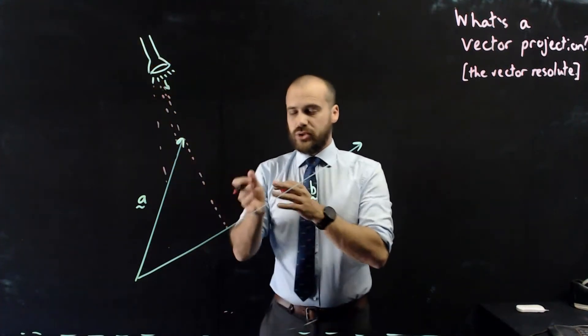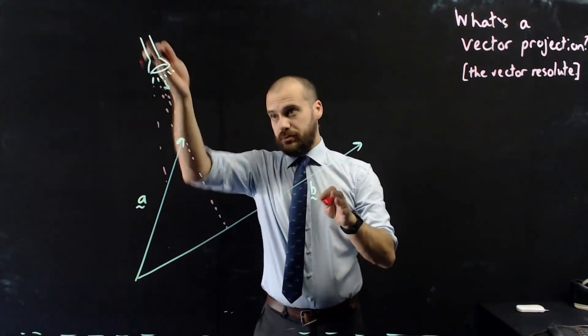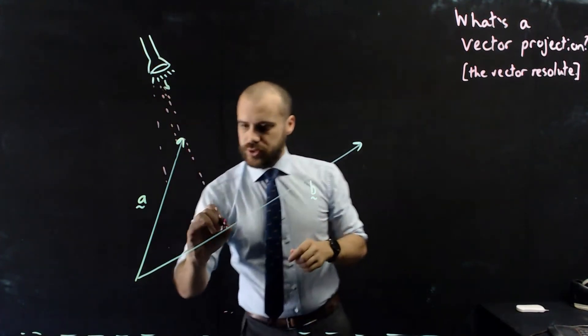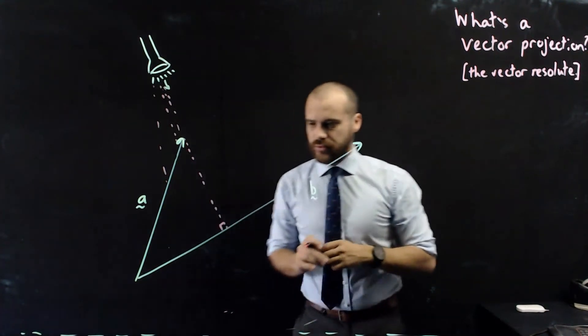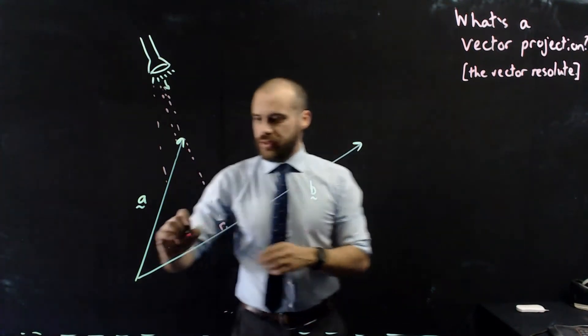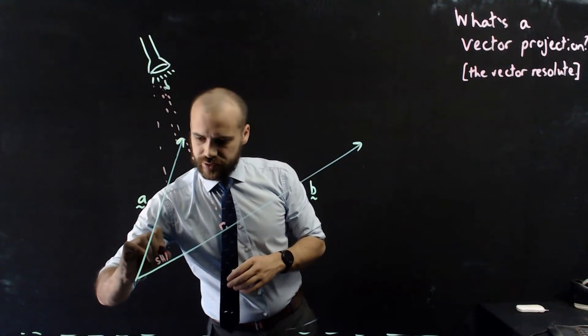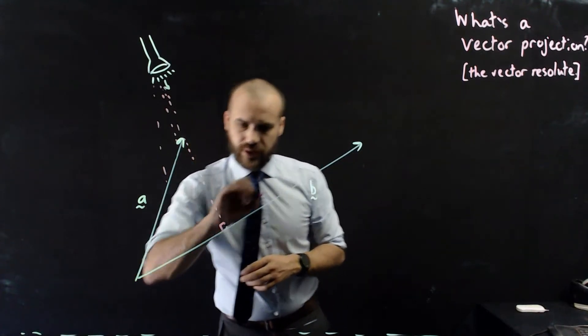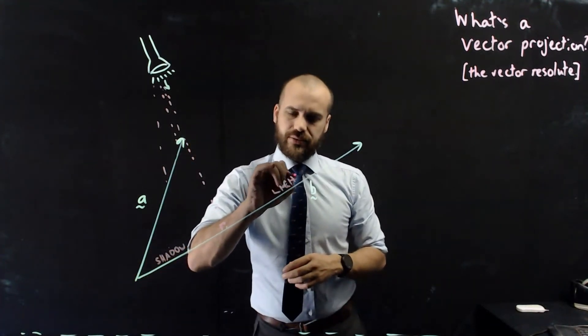Now, that torch is making a right angle with vector B. So it's perpendicular to vector B, which means that we get this nice little right angle here. This is shadow. And this is light.